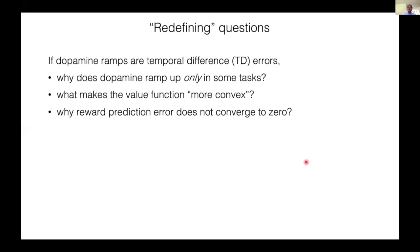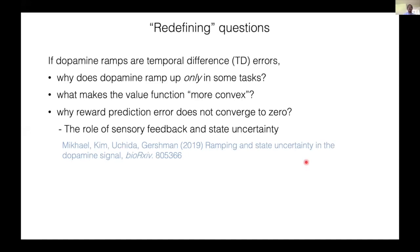These experimental results appear to redefine relevant questions for the future. If dopamine ramps are temporal difference errors, the important questions are why dopamine ramps up only in some tasks, what makes the value function more convex, and why prediction error does not converge to zero. Addressing these questions will require further interplay between theory and experiment. Our results so far indicate the importance of sensory feedback.